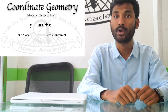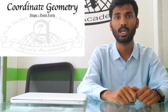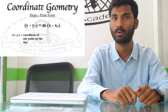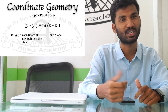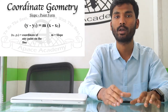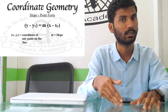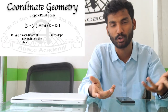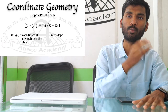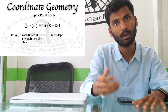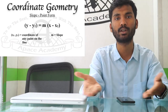Second is slope-point form: y - y1 = m(x - x1), where M is the slope and (x1, y1) is the coordinate of any point on the line. It is very important that the point should be on the line. Just substitute the slope and the point's coordinates, then simplify to get the equation in general form: Ax + By + C = 0.